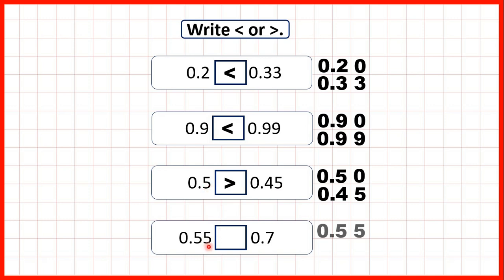Now 0.55 and 0.7. We write the numbers out with the decimal points lined up and write 0 in empty squares. Both numbers have 0 ones, but if we look at the tenths we have 5 and 7. So we know straight away that the second number with 7 tenths is our larger number.